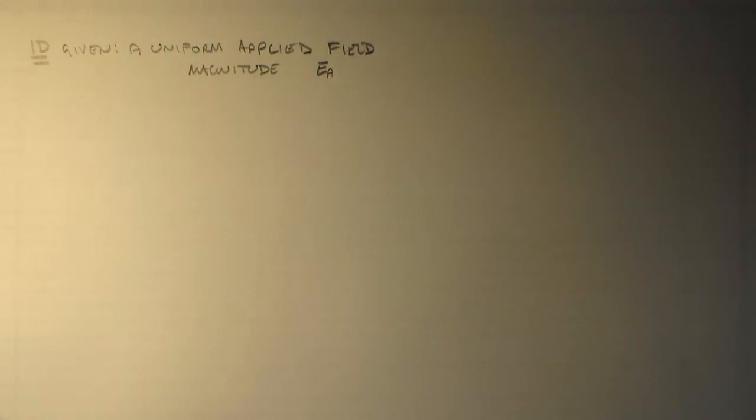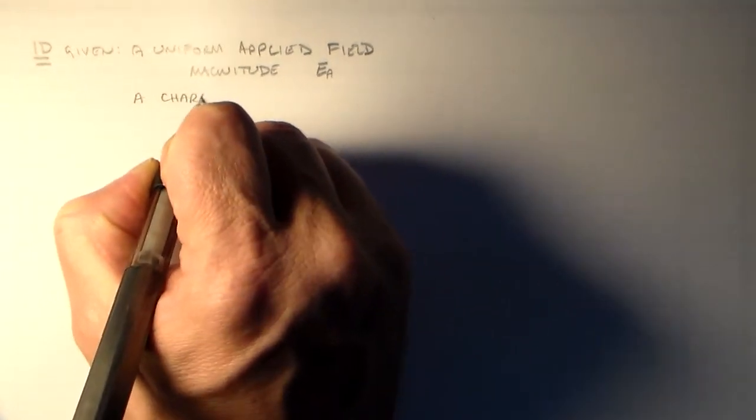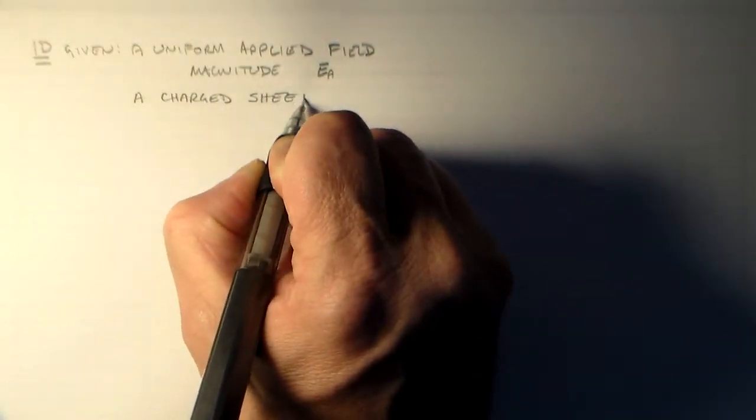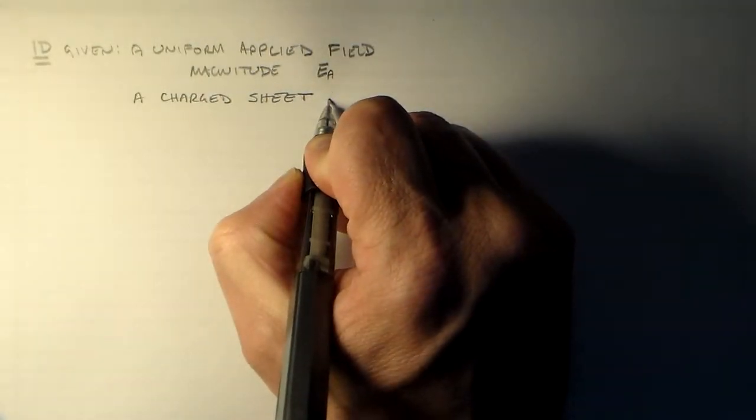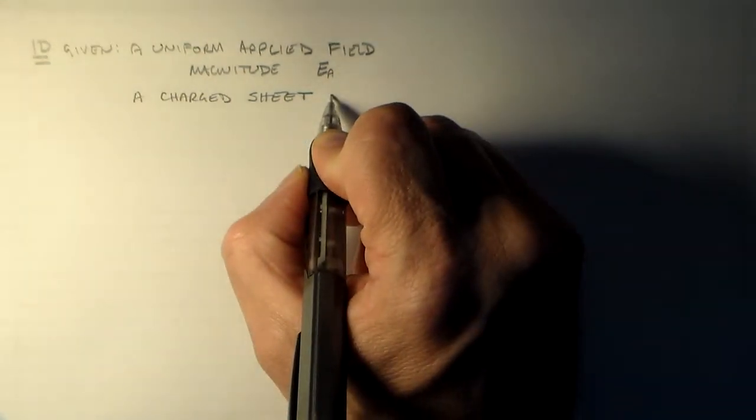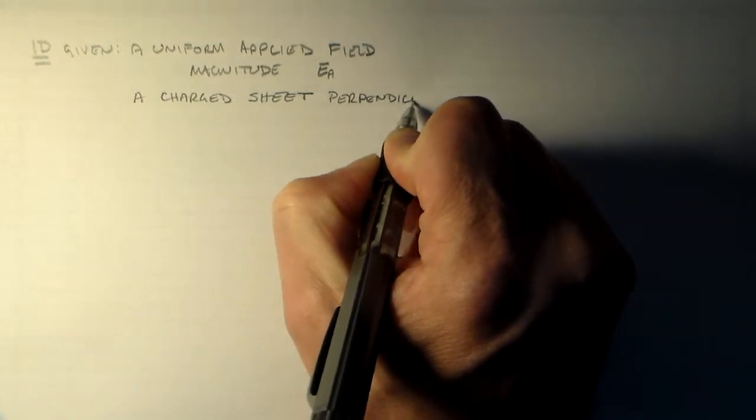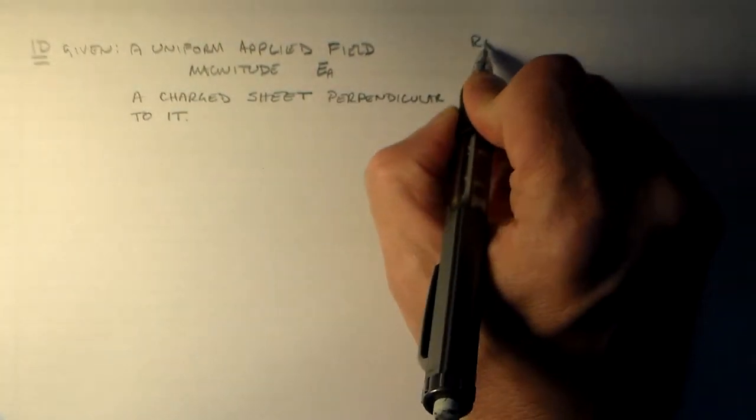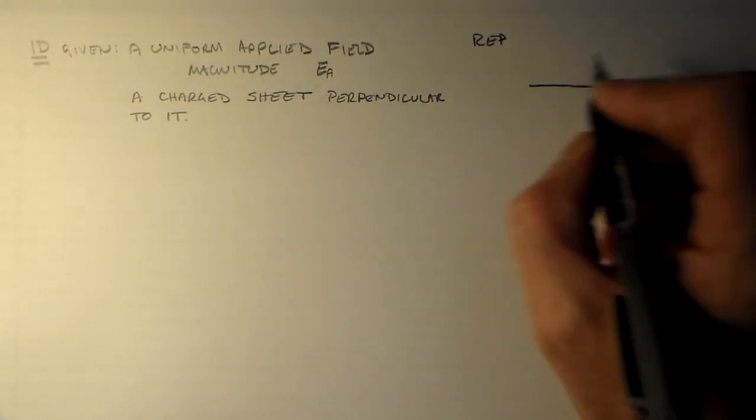And then we want to have a charged sheet in its presence, a charged sheet. Okay, at an angle. No, no, I don't want it at an angle. Perpendicular to it. Okay, so that's basically all. So we have a charged sheet in an applied field.